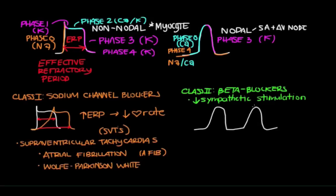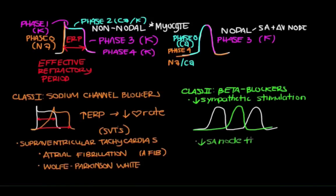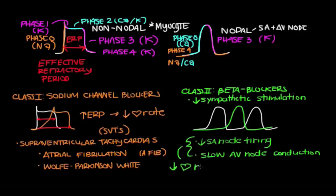Beta blockers work by decreasing your phase 4 slope, so it takes you longer to hit threshold. Once you hit threshold, the action potential will be the same, but it takes longer to get there. By decreasing the rise of phase 4, you're going to decrease the frequency of SA node firing. Since beta blockers also work at the AV node, you slow conduction through the AV node. Both of these things work to decrease heart rate, which is why beta blockers are great at treating SVTs like AFib and even atrial flutter.